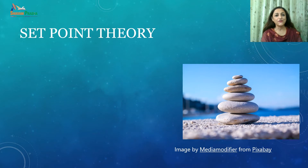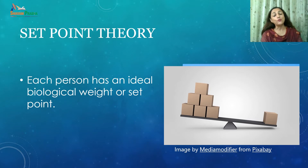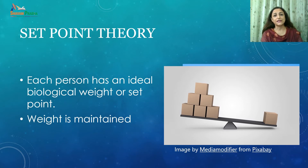There is another theory called the set point theory. According to this theory, each individual regulates the amount of body fat they normally have — each person has an ideal biological weight or a set point. Once body weight reaches this point, a whole set of signals is produced that influences a person's intake to maintain their weight, and it will resist any kind of change. This theory indicates that an overweight person's body will resist any weight loss effort.